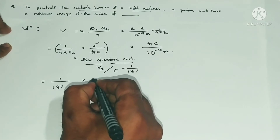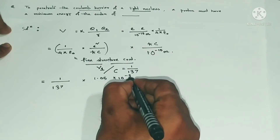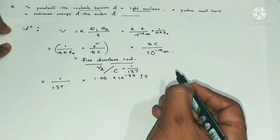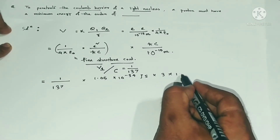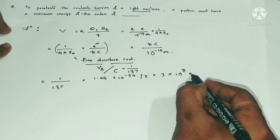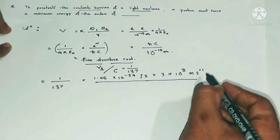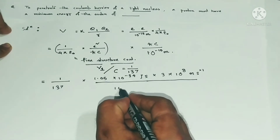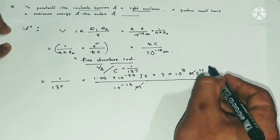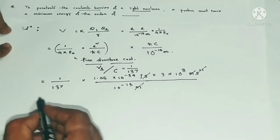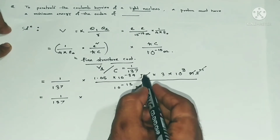So the expression equals 1/137 multiplied by h-bar — whose value is 1.05 × 10⁻³⁴ joule-seconds — multiplied by the speed of light in vacuum, which is 3 × 10⁸ meters per second, all divided by 10⁻¹⁵ meters. We can cancel meters with meters and seconds with inverse seconds.